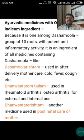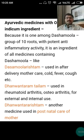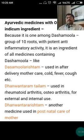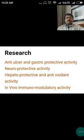Important medicinal preparations that contain Patla as an ingredient: because it is one among the Dashamula group of 10 roots with potent anti-inflammatory activity, it is an ingredient in all medicines containing Dashamula like Dashamularishta — used in post-delivery mother care, cold, fever, and cough. Tanmantara Taila is used in rheumatoid arthritis and osteoarthritis for external and internal use. Tanmantara Arishtam is used in postnatal care of the mother.